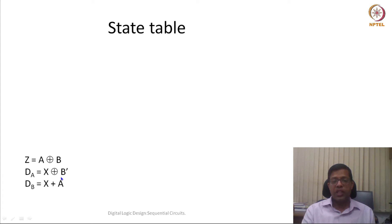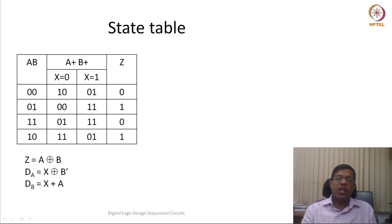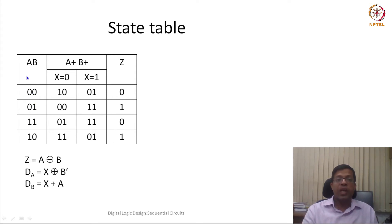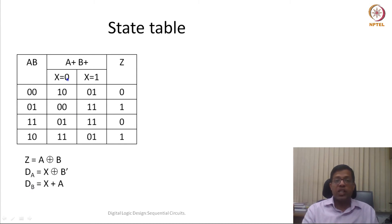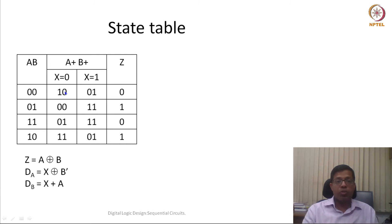Now let's get back to the analysis. Given the behavioral equations — Z = A XOR B, DA = X XOR B_dash, DB = X + A — I can enumerate all possibilities of A and B (0,0 / 0,1 / 1,1 / 1,0) and create a truth table. Given X = 0 and A = 0, B = 0: DA is going to be 1 and DB is going to be 0, so the next state is 1,0.